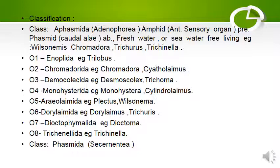Order 2 is Chromadorida; Cyatholaimus is the example. Order 3 is Desmocolecida; Trichoma is the example. Order 4 is Monohysterida; Monohysteria is the example. Order 5 is Araeolaimida; Wilsonema is the example. Order 6 is Dorylaimida; Trichuris is the example.